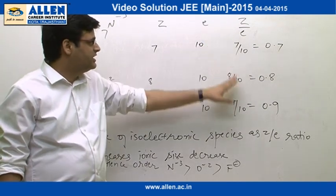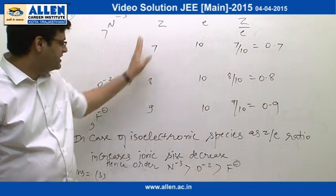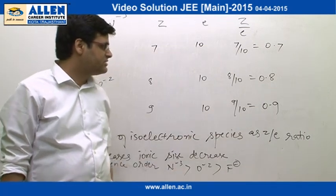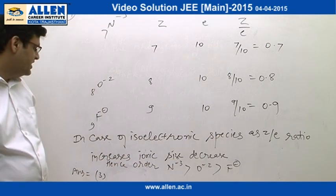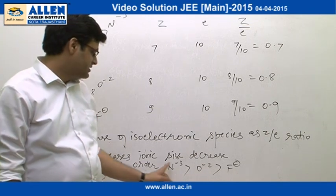Z/E is 0.8. For F^-, Z=9, E=10, and Z/E is 9/10 = 0.9. In case of isoelectronic species, if Z/E ratio increases, the ionic size decreases. Hence N^3-